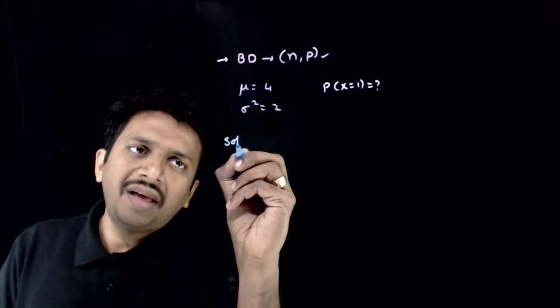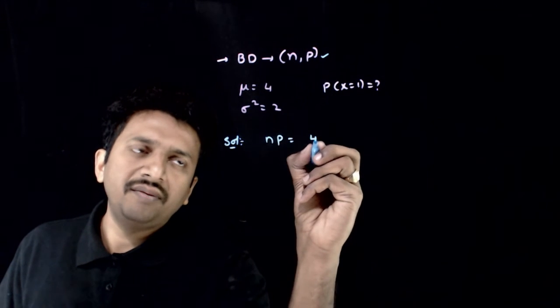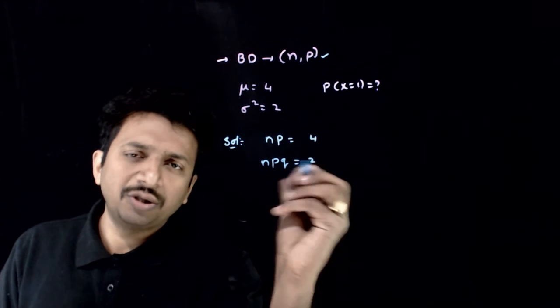Again, we have standard formulas for binomial distribution. The mean of binomial distribution is NP, which is given as 4. The variance is nothing but NPQ, which is given as 2.